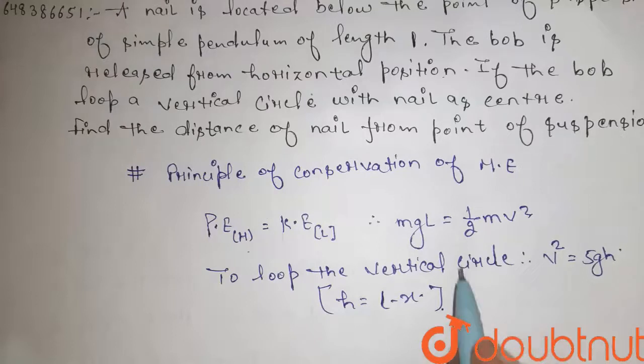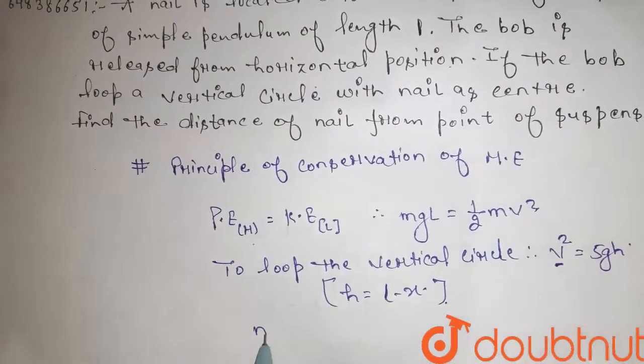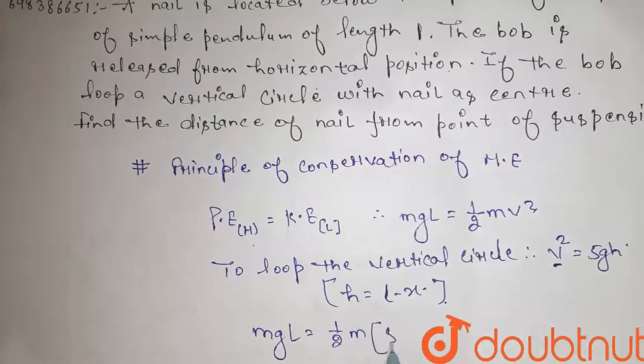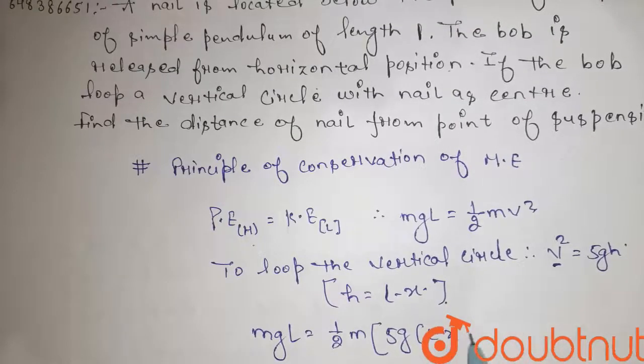V is the velocity at the lowest point. So we can write MgL equals half MV squared equals 5g times L minus X.